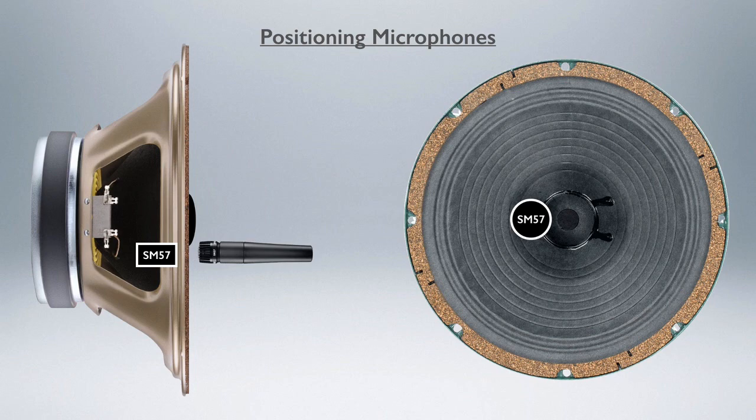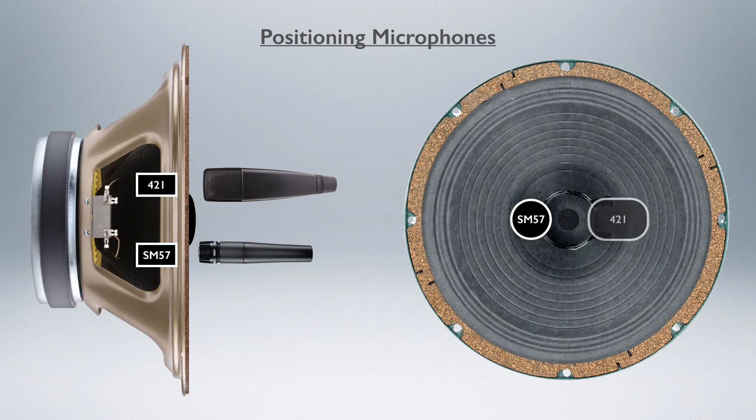Now another perennial favorite dynamic mic is the Sennheiser 421, and I would place that basically in the same place. If you want a little bit more warmth, then you would move out a little bit further, but that is typically a good place for it to be.